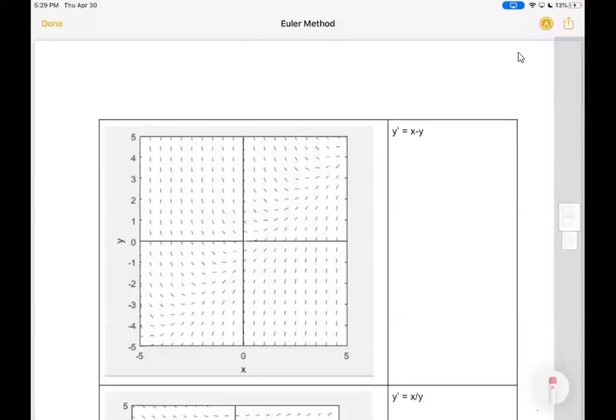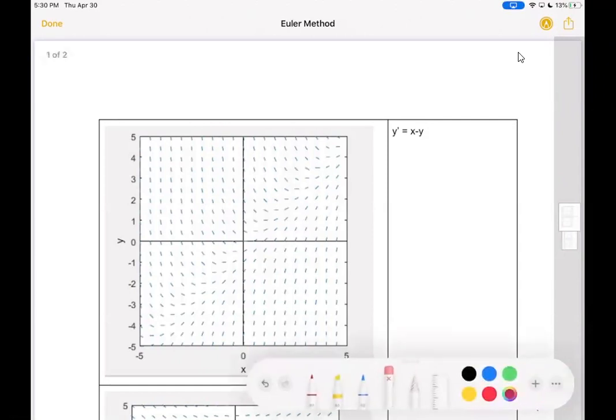In the last video we saw how painful it is to actually have to use Euler's method to step our way through a field. We showed that it's very easy to get a computer to do it, and it will do it very quickly and nicely, so we want to leave that to a computer.